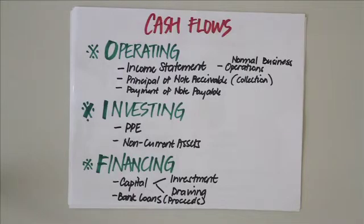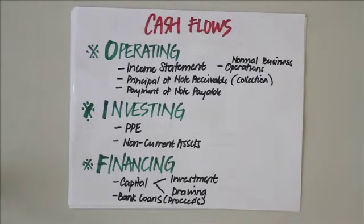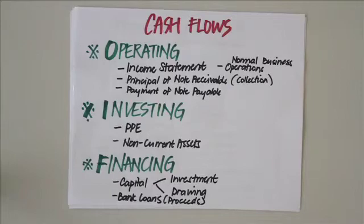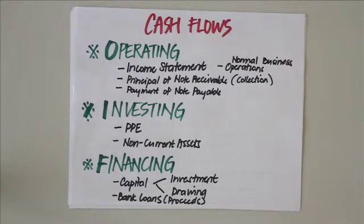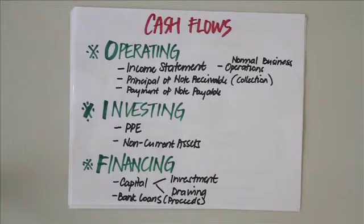Next we have investing activities, which include transactions relating to non-current assets such as property, plant and equipment, intangible assets, and investments. In basic accounting, focus only on property, plant and equipment. Cash receipts from investing activities include cash proceeds from selling investments and plant assets, or cash proceeds from collecting the principal amount on loans. Cash payments include payments to acquire investments and plant assets, or amounts advanced to borrowers.